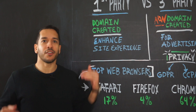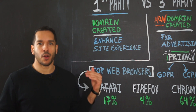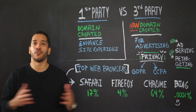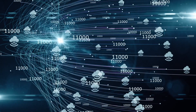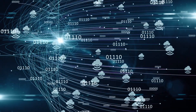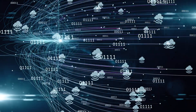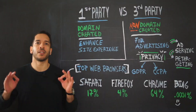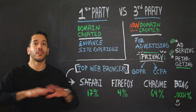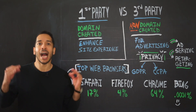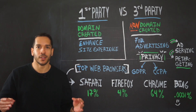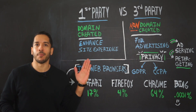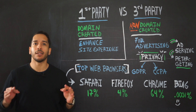There is a difference between a first-party and a third-party cookie. At a technical level they're both very similar — they can do the same things, they have the same types of information, and they can both perform the same functions. But where they differ is how they are used.